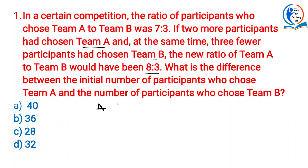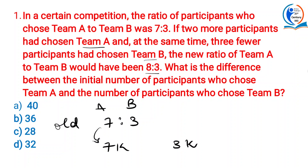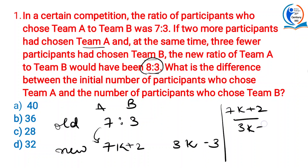Now, team A and team B. What is the old ratio? It is 70 to 3. In the new ratio, if two more participants had chosen team A, then in absolute numbers, the number of participants is 7k and 3k. Two more participants had chosen team A means 7k plus 2, and three fewer participants had chosen team B means 3k minus 3. The new ratio is 80 to 3, which means (7k + 2) / (3k − 3) = 8/3.